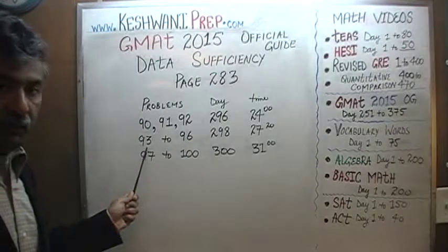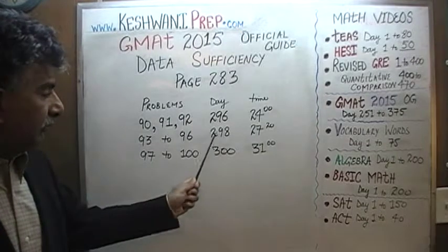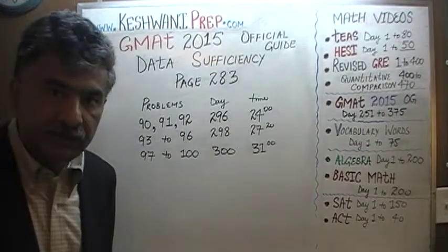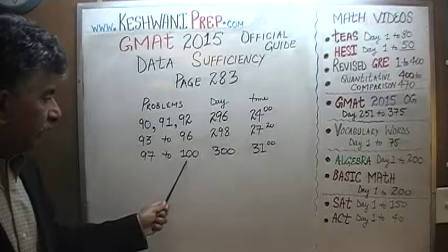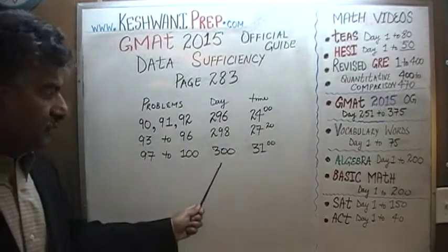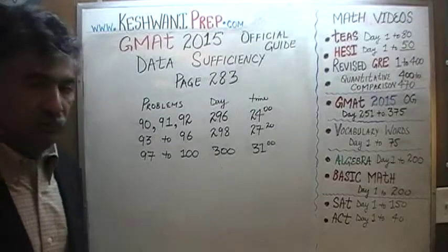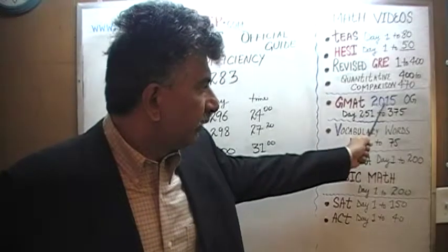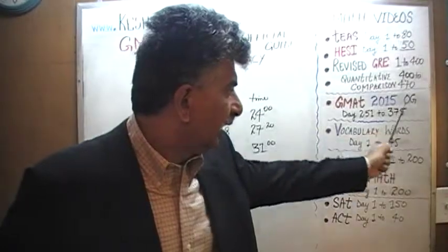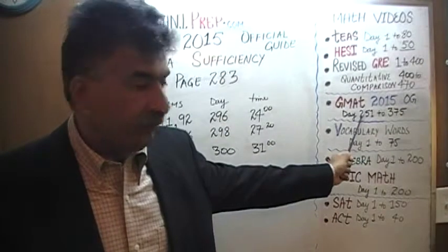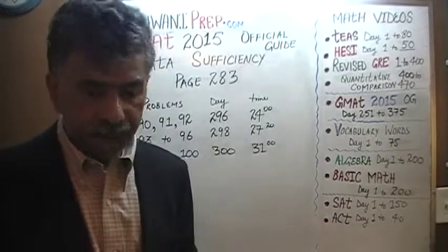You will find solutions to problems 93, 94, 95, and 96 on day number 298. And finally, problems 97, 98, 99, and 100 — the last four problems — we solved them on day number 300. You will find solutions to every single math problem appearing in the 2015 Official Guide from day number 251 to 375. Thank you.